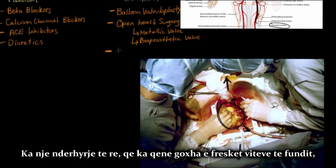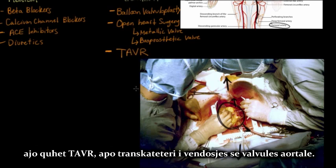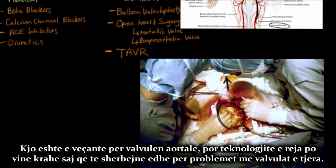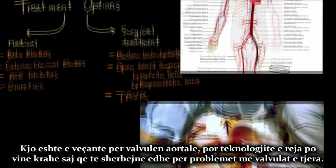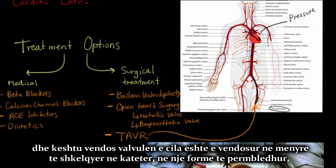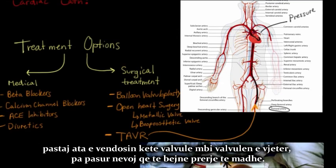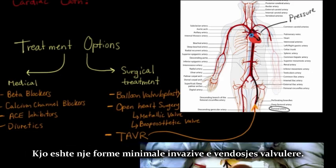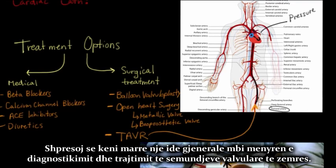A newer intervention that has been prominent in recent years is TAVR, or transcatheter aortic valve replacement, which is specific to the aortic valve — though newer technologies are being developed for other valve problems. A catheter is passed through the femoral artery all the way up to the heart, crossing the aortic valve, and a replacement valve that has been brilliantly condensed onto the catheter is deployed over the old valve without ever making a large incision. This is a minimally invasive form of valve replacement.